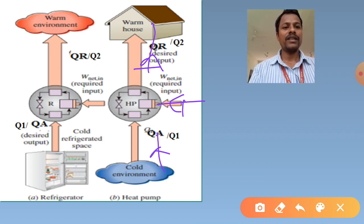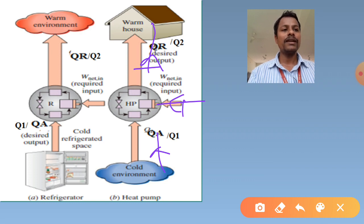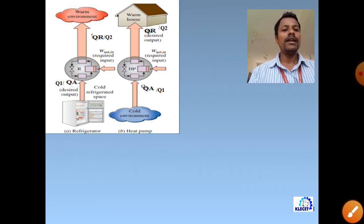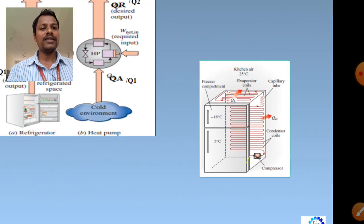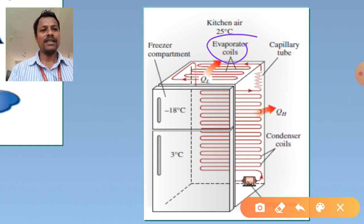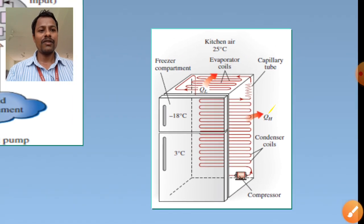The learning outcomes from this module: we will be able to understand vapor compression refrigeration and analyze it thermodynamically. We will sketch schematic diagrams as well as temperature-entropy (T-S) diagrams for the VCR cycle, and evaluate property data at principal states - compressor inlet, compressor outlet, and condenser outlet.